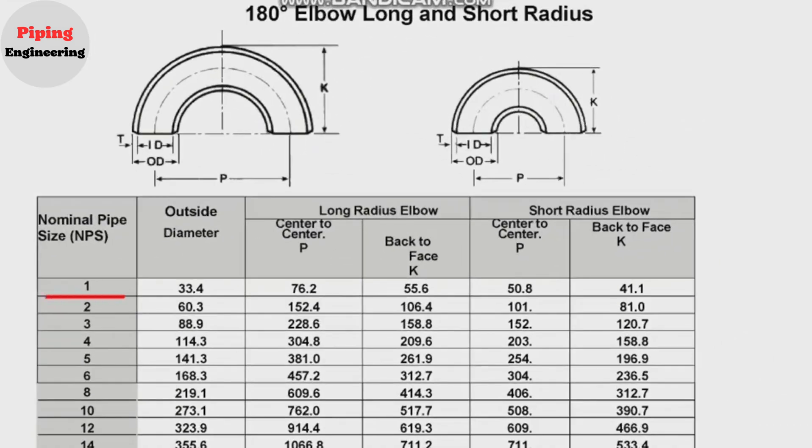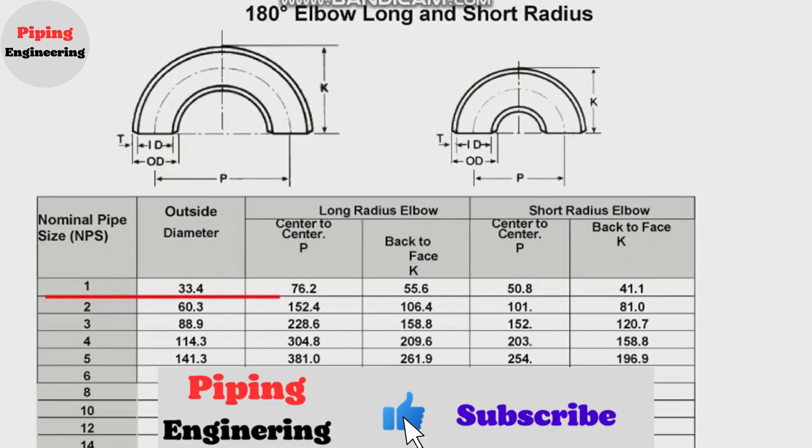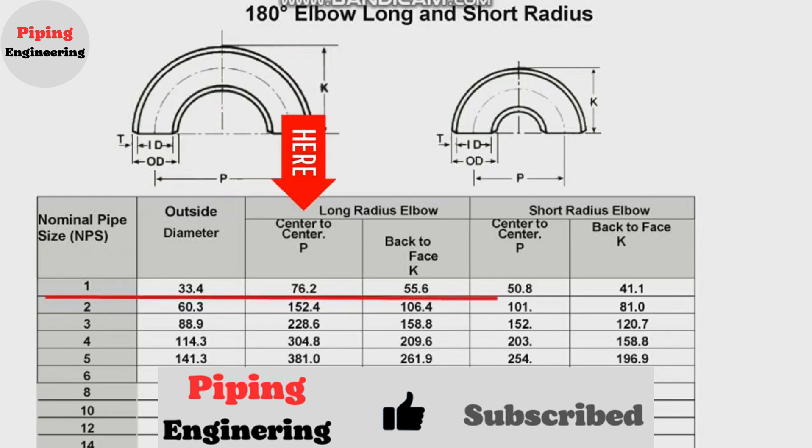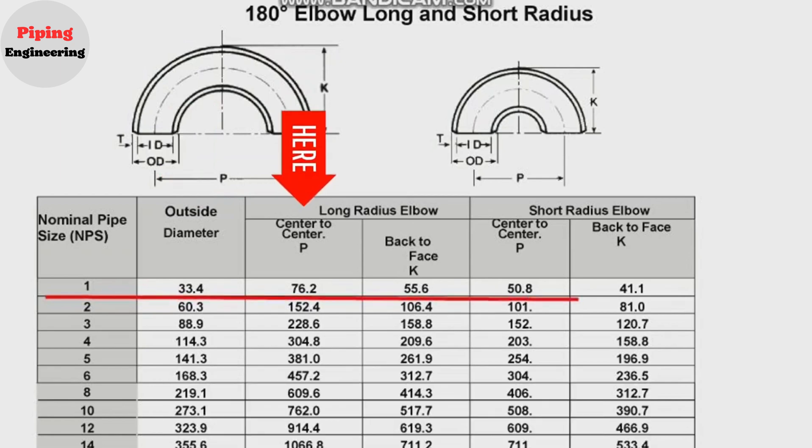Nominal pipe size 1 inch, outside diameter is 33.4 mm. For long radius elbows P, center to center, is 76.2 mm. Back to face, K, is 55.6 mm.